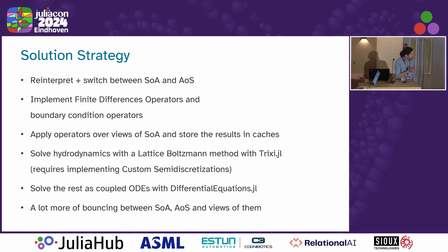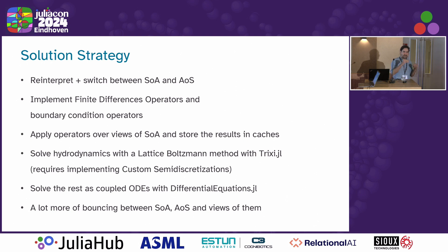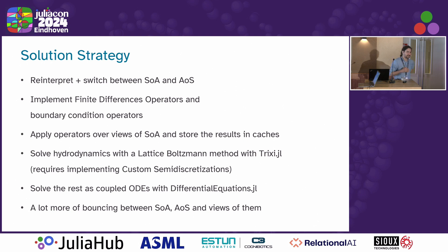Our strategy is to have a single flat array of scalars, and we reinterpret this depending on the strides that describe either the order parameter, the concentrations, or the different parts in these equations. We switch back and forth between arrays of strides or strides of arrays depending on what we need. We tried to use the method of lines package and the ModelingToolkit, but they aren't designed for what we need, so we had to implement our own finite difference operators — though with Julia and multiple dispatch, that's pretty easy.